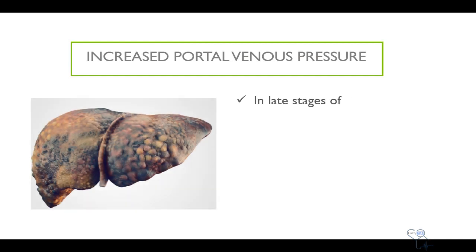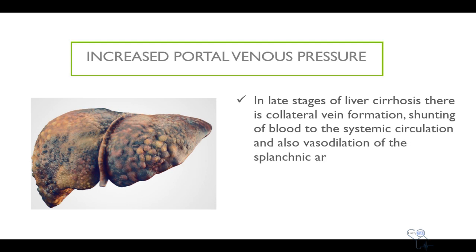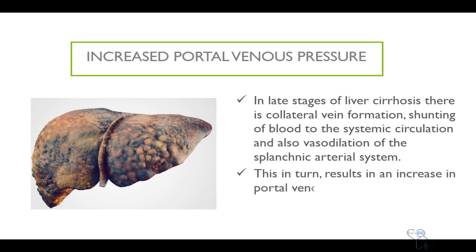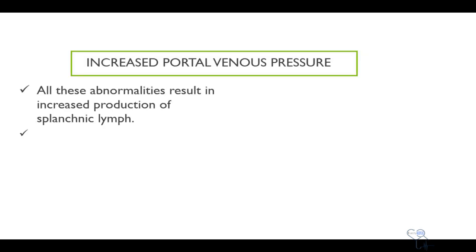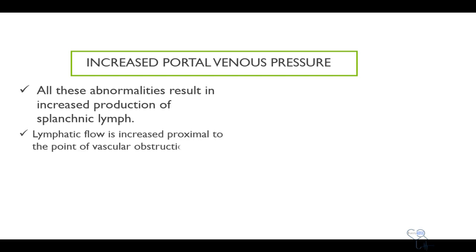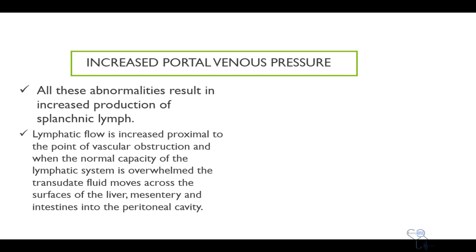In late stages of liver cirrhosis, there is collateral vein formation, shunting of blood to the systemic circulation, and vasodilation of the splanchnic arterial system. This in turn results in an increase in portal venous flow. All these abnormalities result in increased production of splanchnic lymph. Lymphatic flow is increased proximal to the point of vascular obstruction, and when the normal capacity of the lymphatic system is overwhelmed, the transudate fluid moves across the surface of the liver, mesentery, and intestines into the peritoneal cavity.